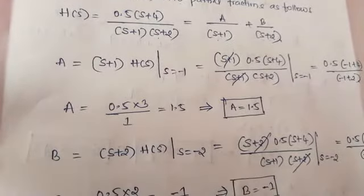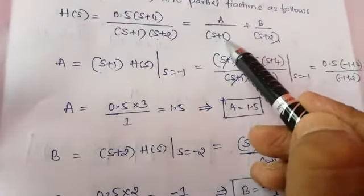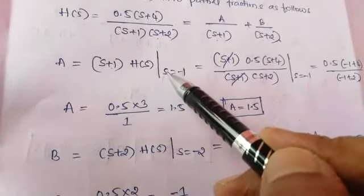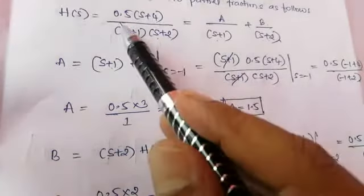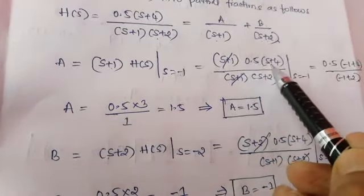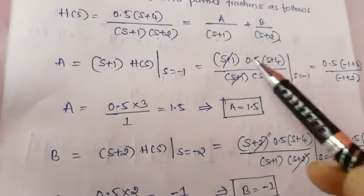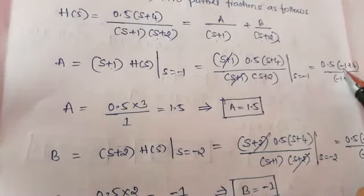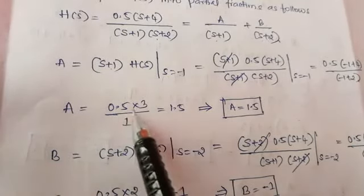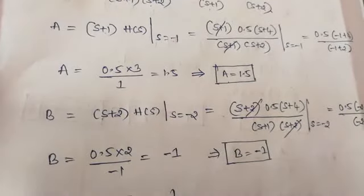Let us calculate the coefficients A and B. A equals (S plus 1) multiplied by H(S) where S equals minus 1. Substituting H(S) as 0.5 into (S plus 4) divided by (S plus 1)(S plus 2) at S equals minus 1, the (S plus 1) terms cancel. Numerator: 0.5 into 3, denominator: 1. So we get A equal to 1.5.